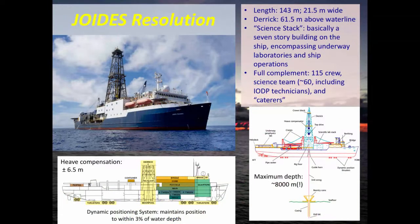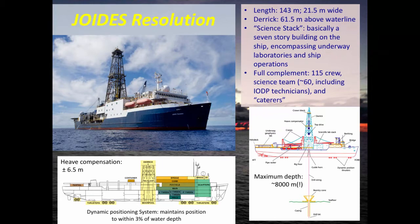Here's the ship. It's 143 meters long, 21.5 meters wide — a pretty good-sized ship. It has a derrick in the middle that's 61.5 meters above the waterline — basically a ship with a big hole in the middle because that derrick runs right down to the bottom of the ocean. There are two main inhabited spaces: the science stack, which is like a seven-story science laboratory building handling all the core that comes up and doing testing and analysis, and the sleeping quarters toward the front. The full complement on the ship when out is 115.